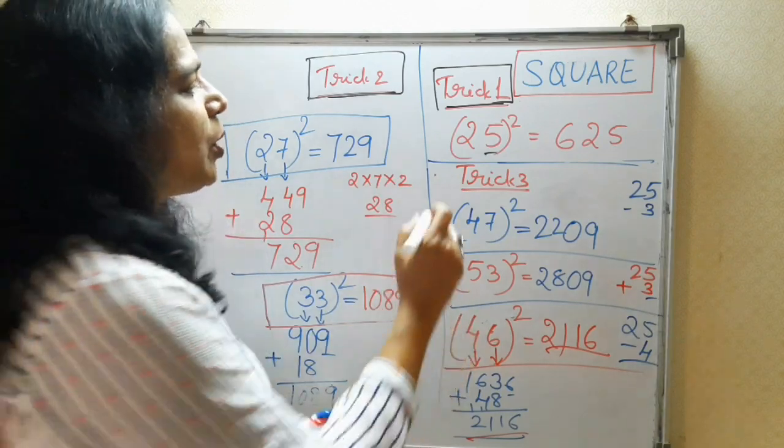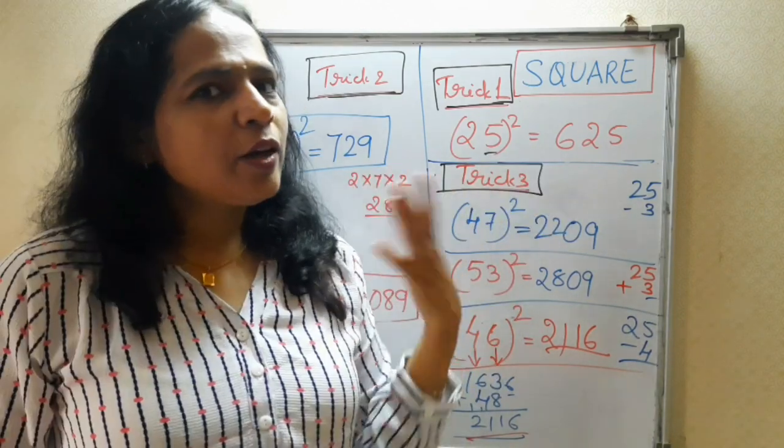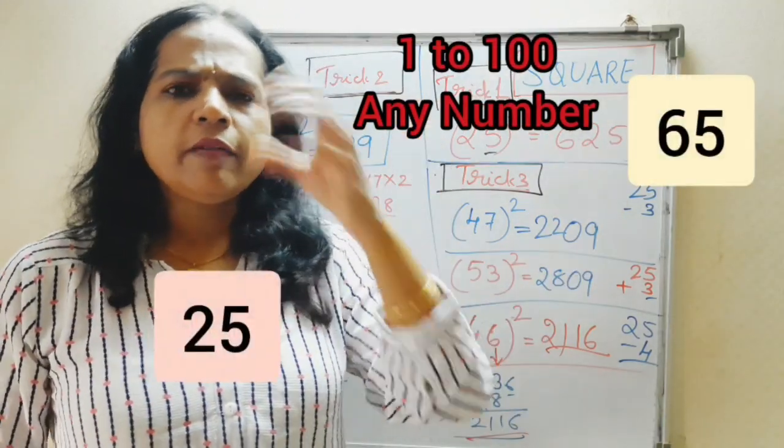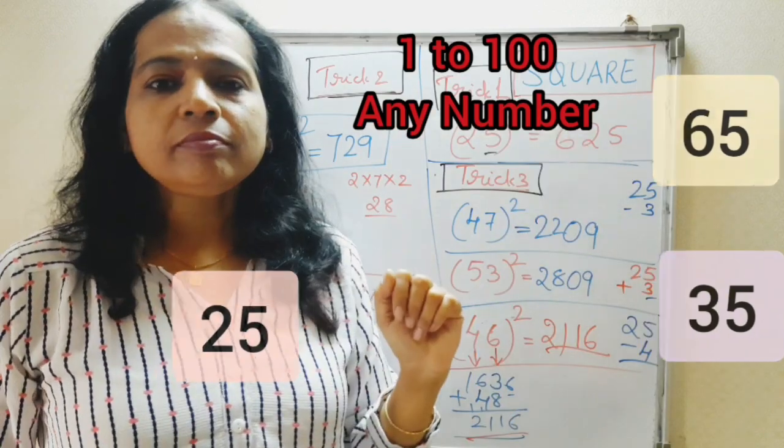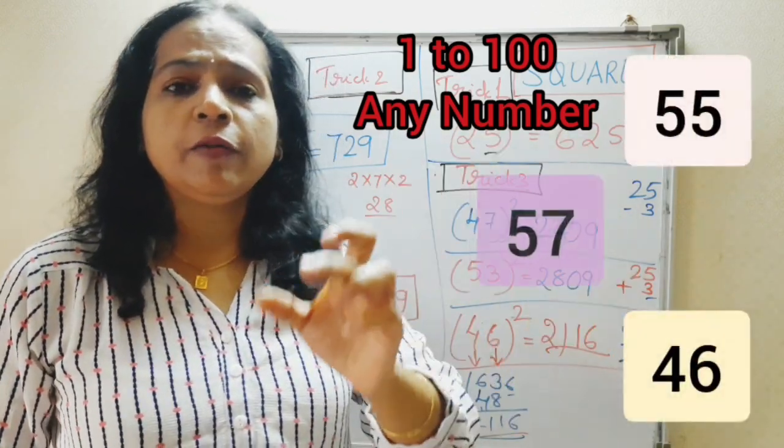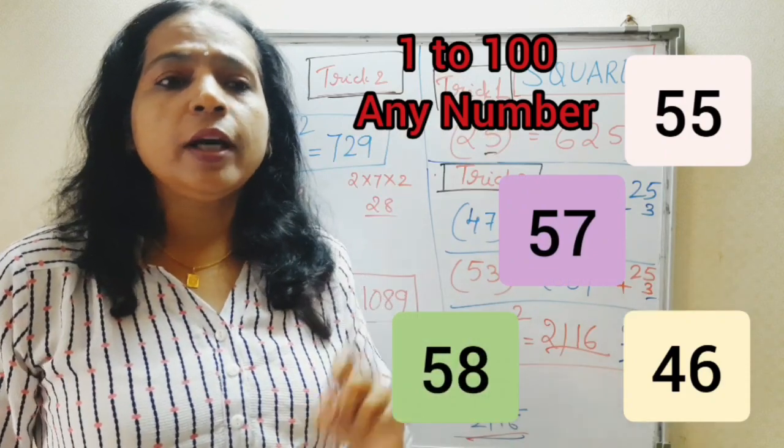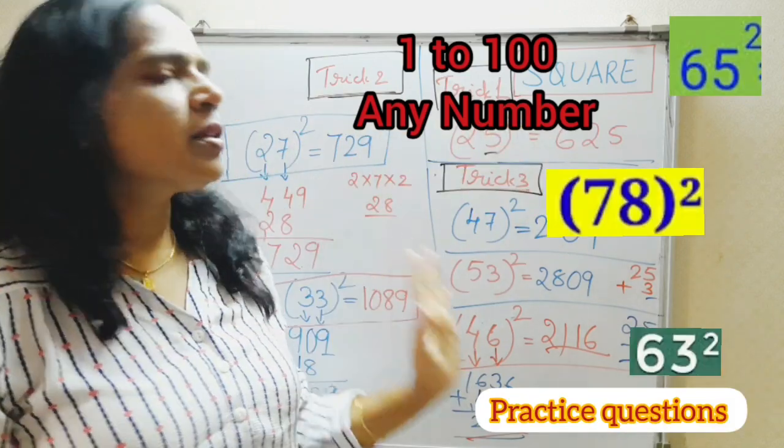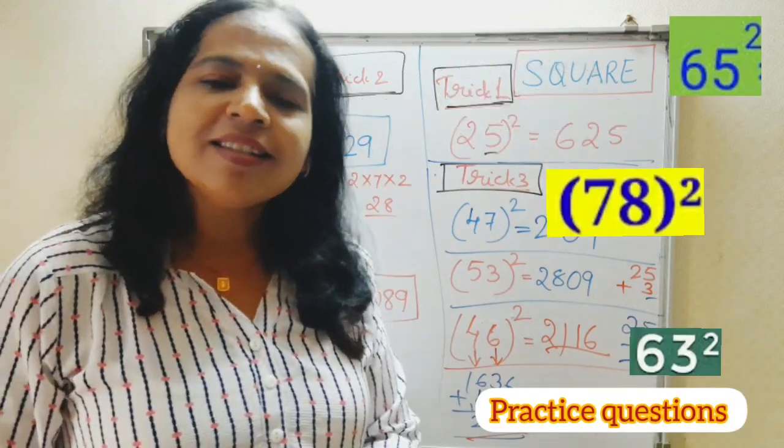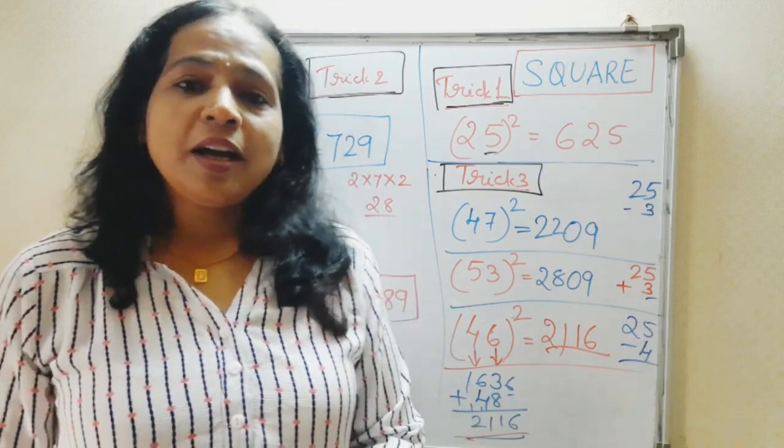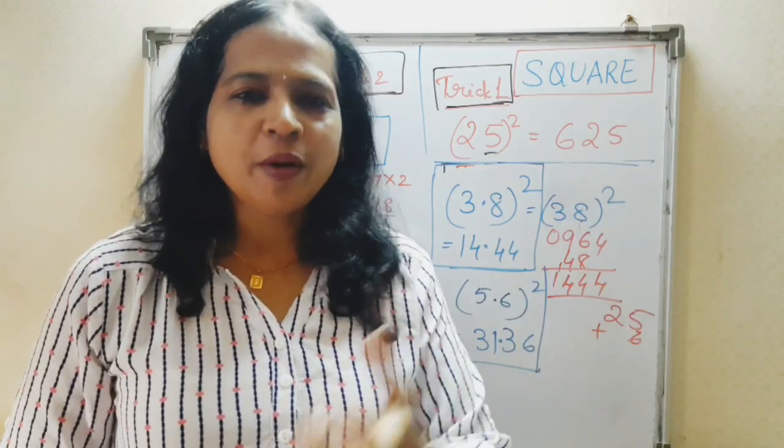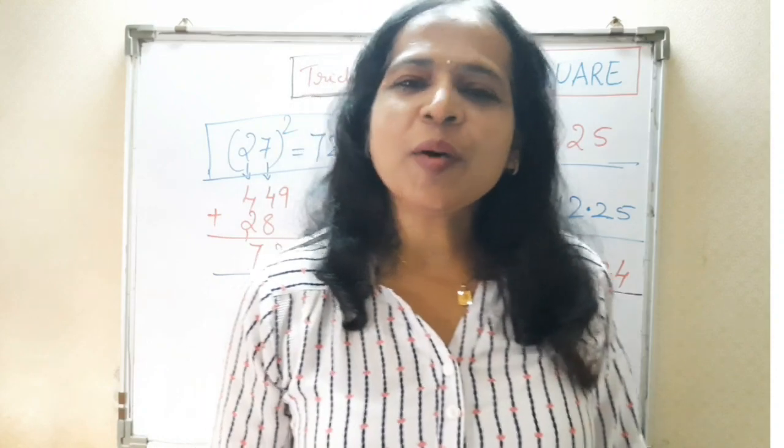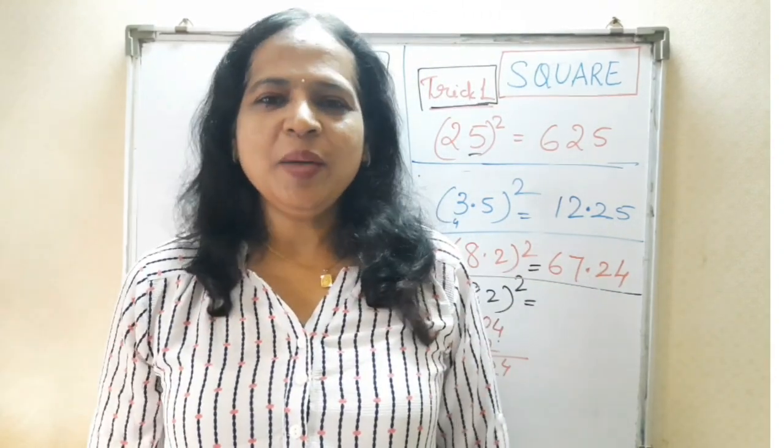I hope you must have understood all these 3 tricks. And you are definitely going to use these all tricks. You take your own numbers and practice this. Whatever comes in your mind, take 65, 25, 35. Do this trick. Then, take nearby numbers 46, 55, 57, 58. Use this trick. Again, take any other number, whichever it comes in your mind and use this. And see, practice. And definitely, you are going to save your time. And you will speed up your mathematics. I hope you must have understood all these tricks. And you are going to use these tricks in your daily mathematics.